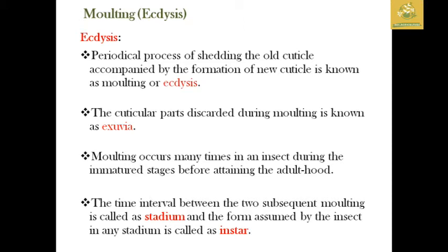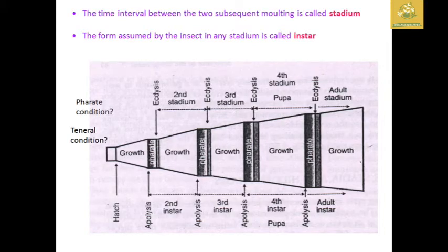Molting occurs in the immature stage. There are two subsequent moltings. The time period between two moltings is called the stadium. In the time of the molting process, the stage is called the instar.